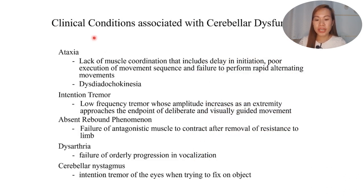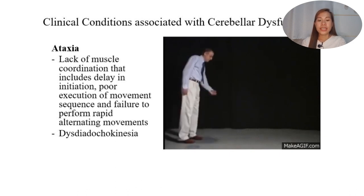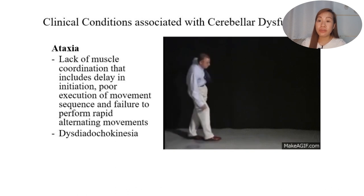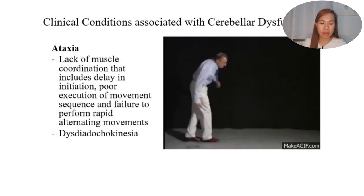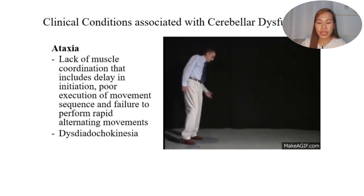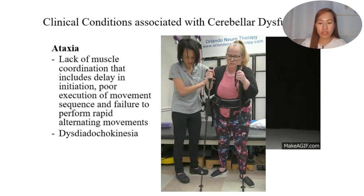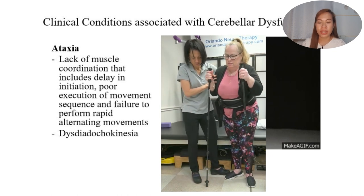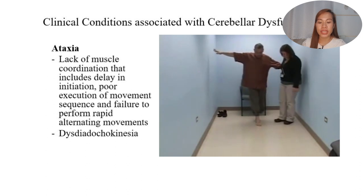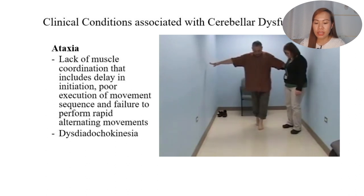The different clinical conditions associated with cerebellar dysfunction begin with ataxia. Since the cerebellum is important for both balance and coordination of movement, ataxia involves lack of muscle coordination including delay in initiation, poor execution of movement sequences, and inability to perform rapid alternating movements — called dysdiadochokinesia.